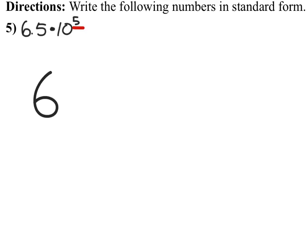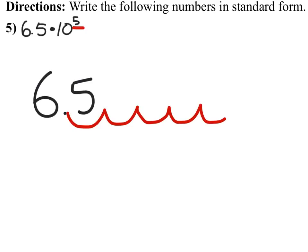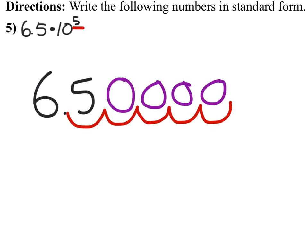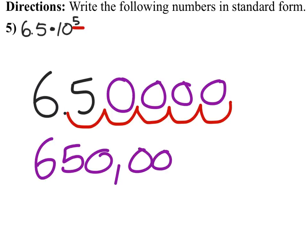So from this 6.5, I will move it to the right one, two, three, four, five times. All of those empty spaces get zeros, like these. And we get 650,000, and we are done.